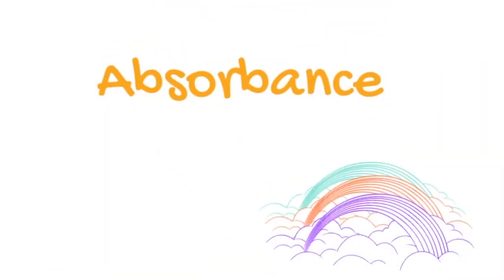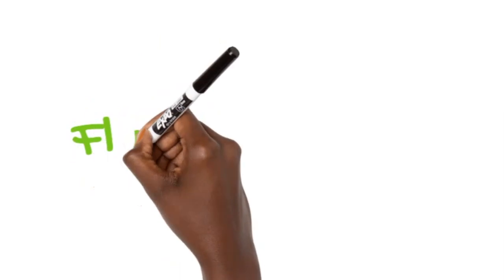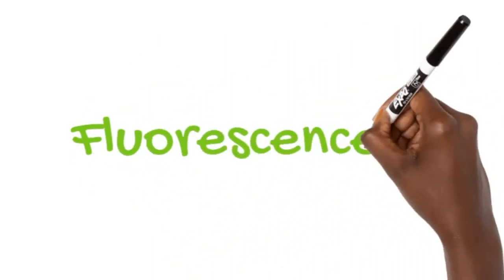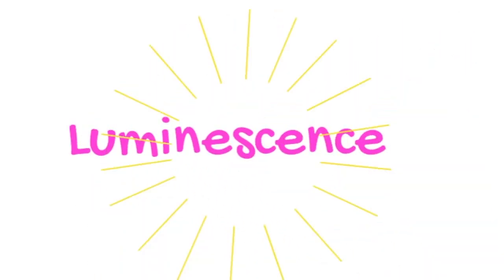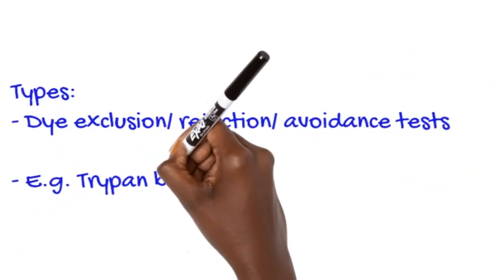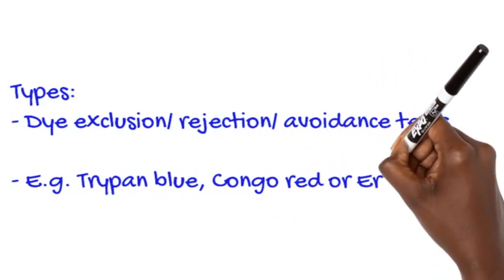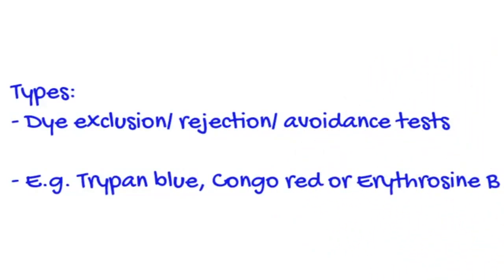I'll aim to give broad overviews of the categories of assays and the technology you're utilizing, rather than specific pathway details. So once you grasp the general big picture, you can look at the specific details for any given assay you're considering. There are dye exclusion tests, such as trypan blue, Congo red, and erythrosin B, which are dye exclusion-based tests.